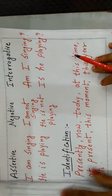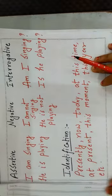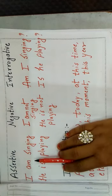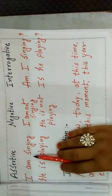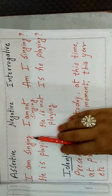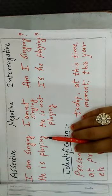Let's formulate some sentences. Assertive sentence. Subject plus be form of the verb that is am here with I. Verb, verb is sing plus ing, am singing. Similarly, he is playing.